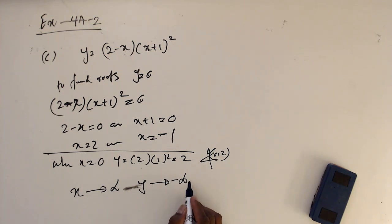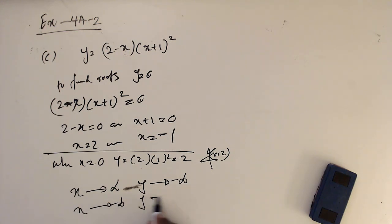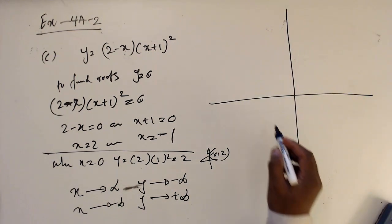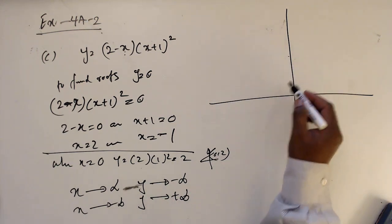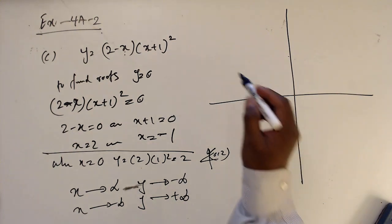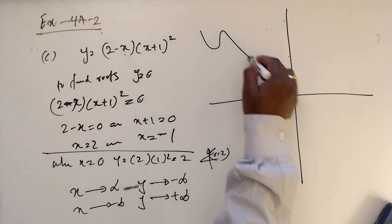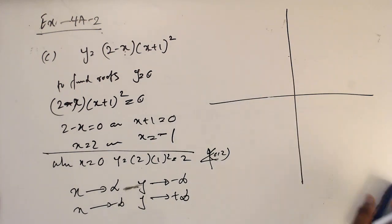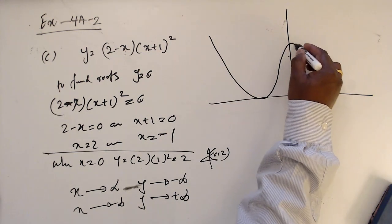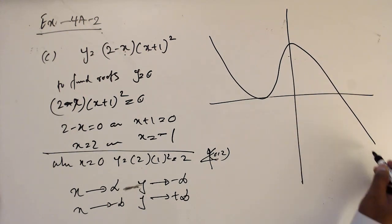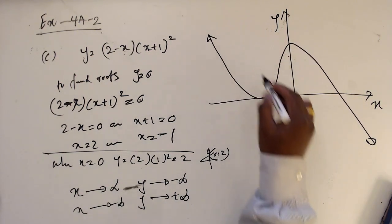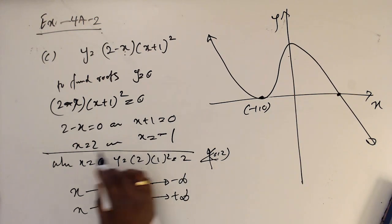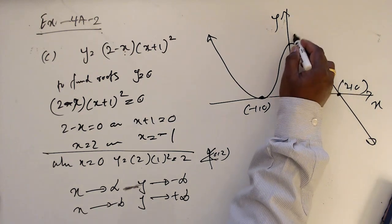Since the coefficient of x cubed is negative, when x goes to positive infinity y goes to negative infinity, and when x goes to negative infinity y goes to positive infinity. The key points are: the repeated root at (minus 1, 0), the simple root at (2, 0), and the y-intercept at (0, 2).